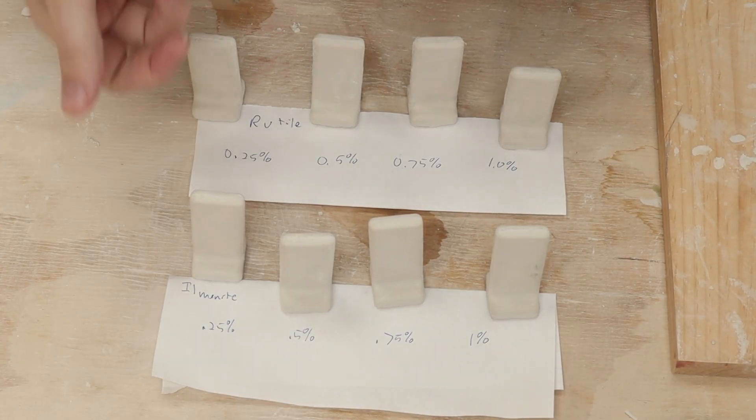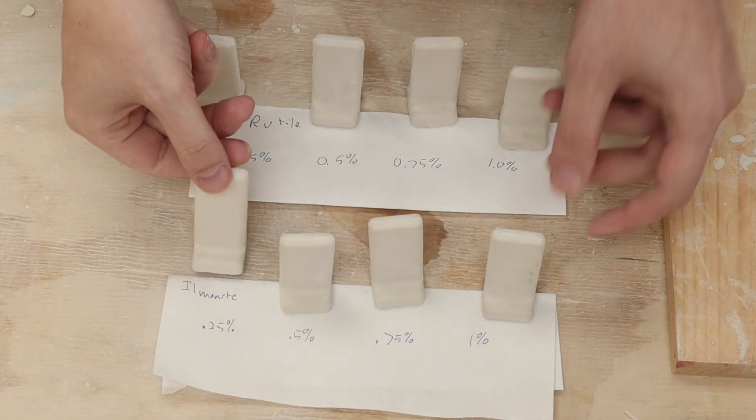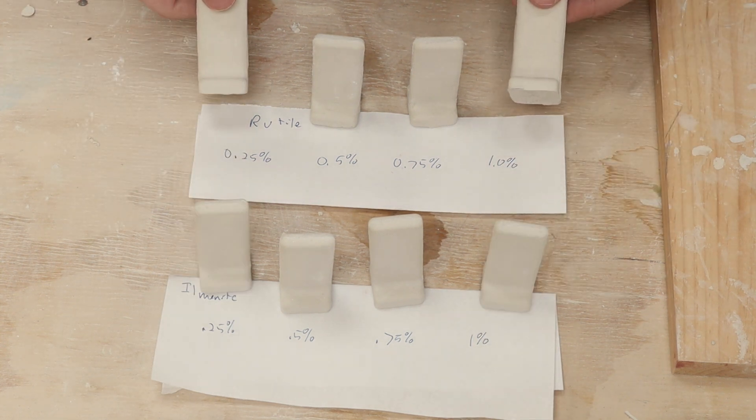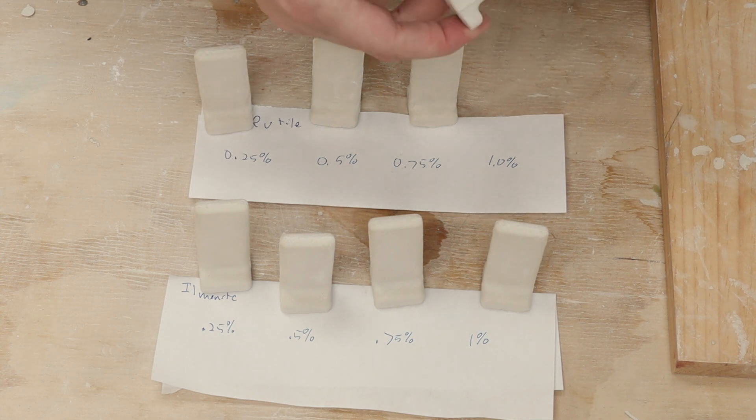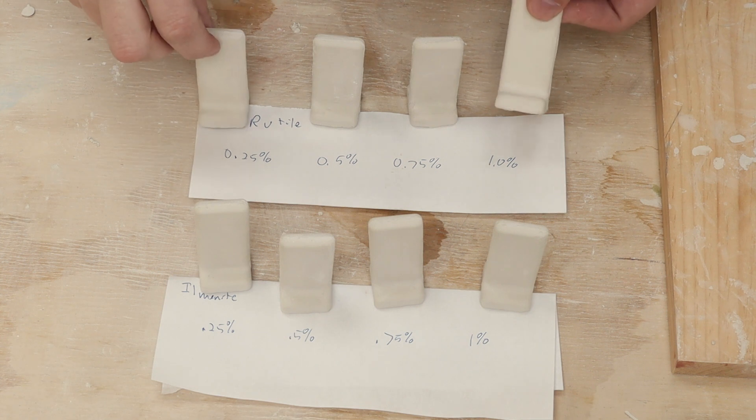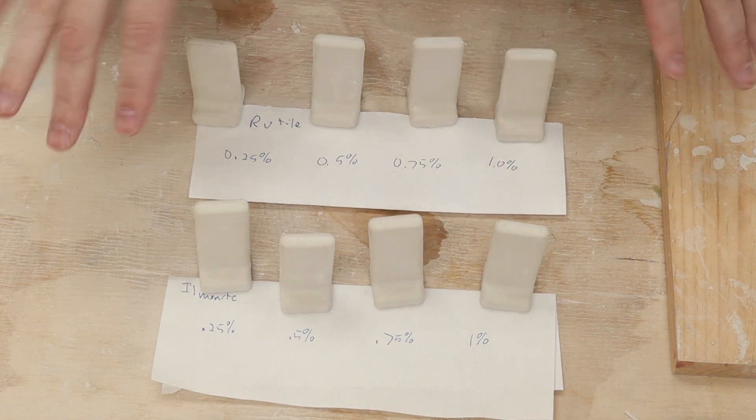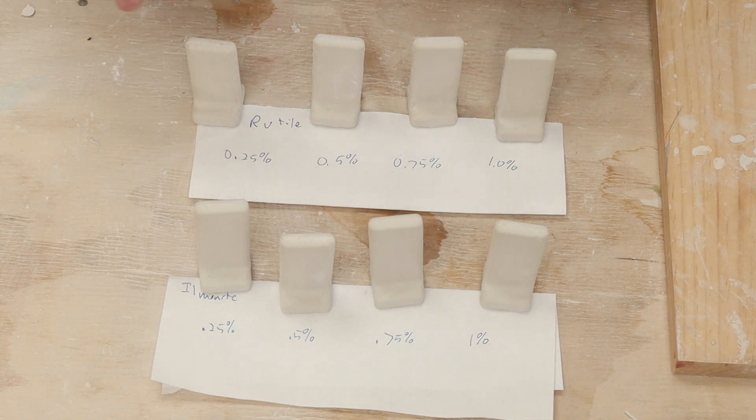All right, and here are all the test tiles. Here are the first four that I did, the 0.25 to 1 percent of ilmenite. And the rutile, likewise, 0.25 to 1 percent. This one, I can kind of sort of see a little bit of the speckles, I believe, that's in the clay. Although it's really faint. So it's quite possible that I have way too little in here, and I might need to go back and retest these with higher percentages.